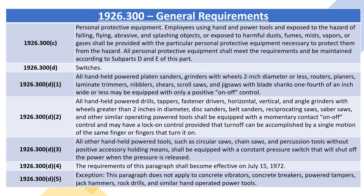1926.300(d)(2): All handheld powered drills, tappers, fastener drivers, horizontal, vertical, and angle grinders with wheels greater than two inches in diameter, disc sanders, belt sanders, reciprocating saws, saber saws, and other similar operating powered tools shall be equipped with a momentary contact on-off control and may have a lock-on control, provided the turn-off can be accomplished by a single motion of the same finger or fingers that turn it on.